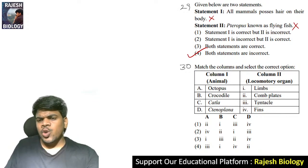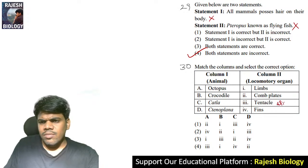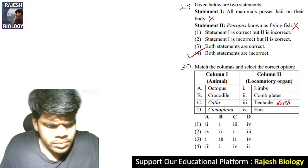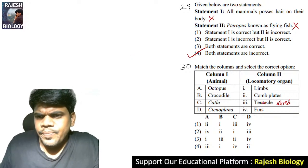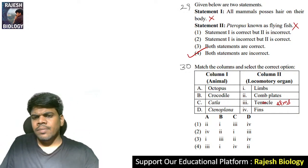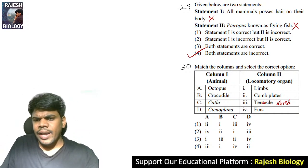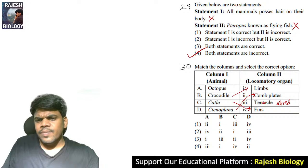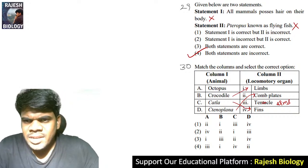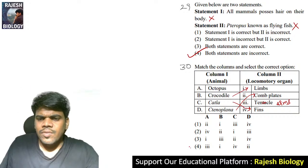Thirtieth question: Octopus — actually it should be arms, not tentacles. Octopus has arms. Match: Octopus arms — A3; crocodile limbs — B1; Katla fins — C4; Ctenoplana comb plates — D2. These are locomotory structures. The right answer is four.